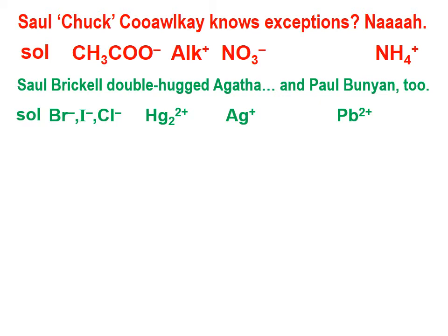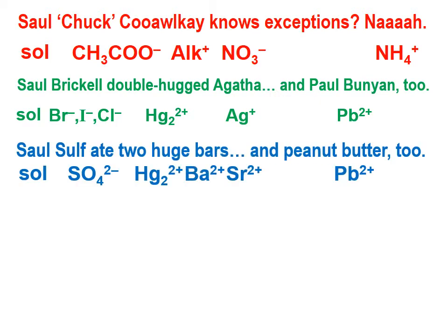The second mnemonic tells us that these three anions — the bromide, iodide, and chloride ions — any compound with those is going to be soluble in aqueous solution, unless the cation in those compounds is the mercury(I) ion, the silver ion, or the lead(II) ion. 'Sol Brackel double-hugged' — and when you double-hug something, you join with it — 'Agatha and Paul Bunyan too.'